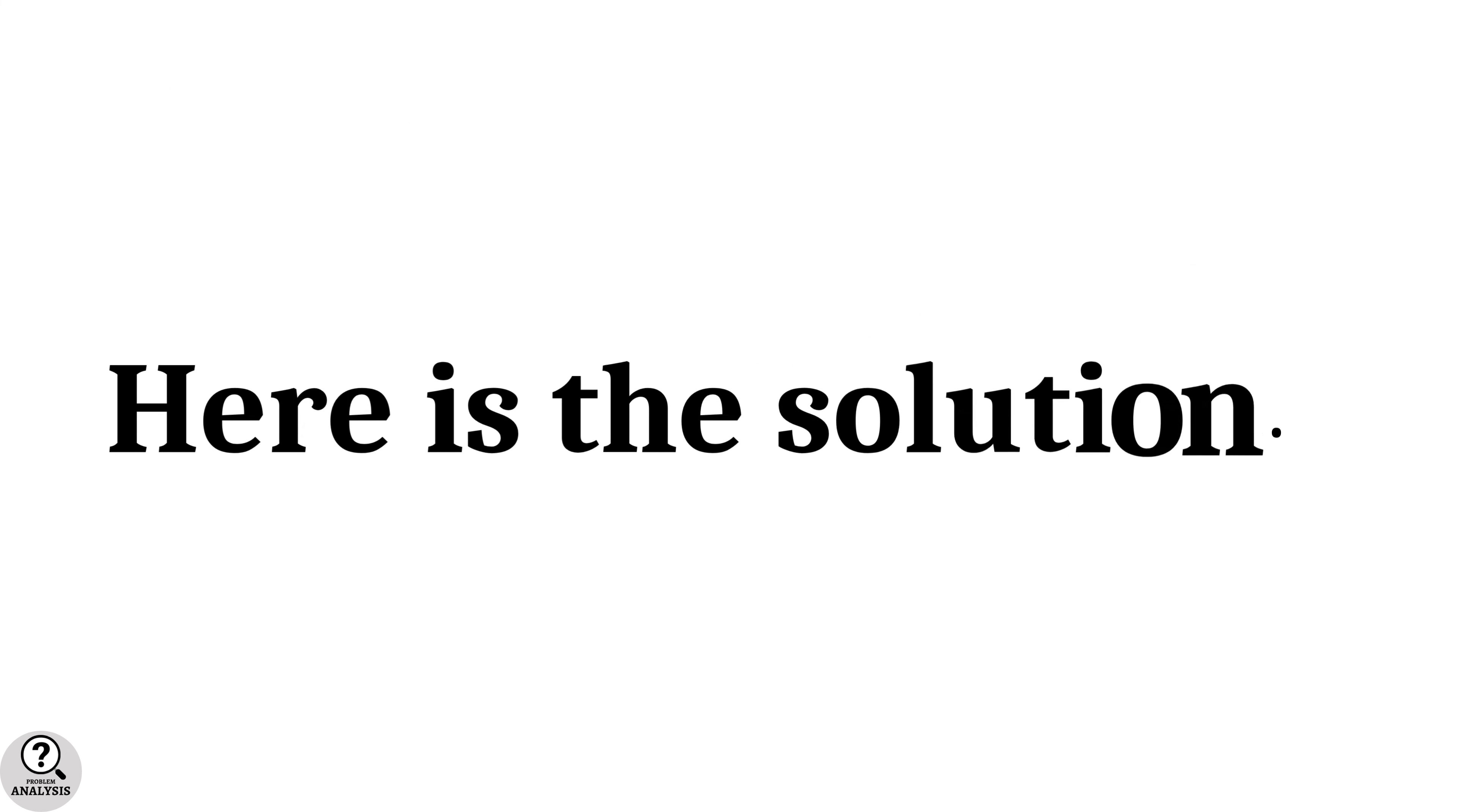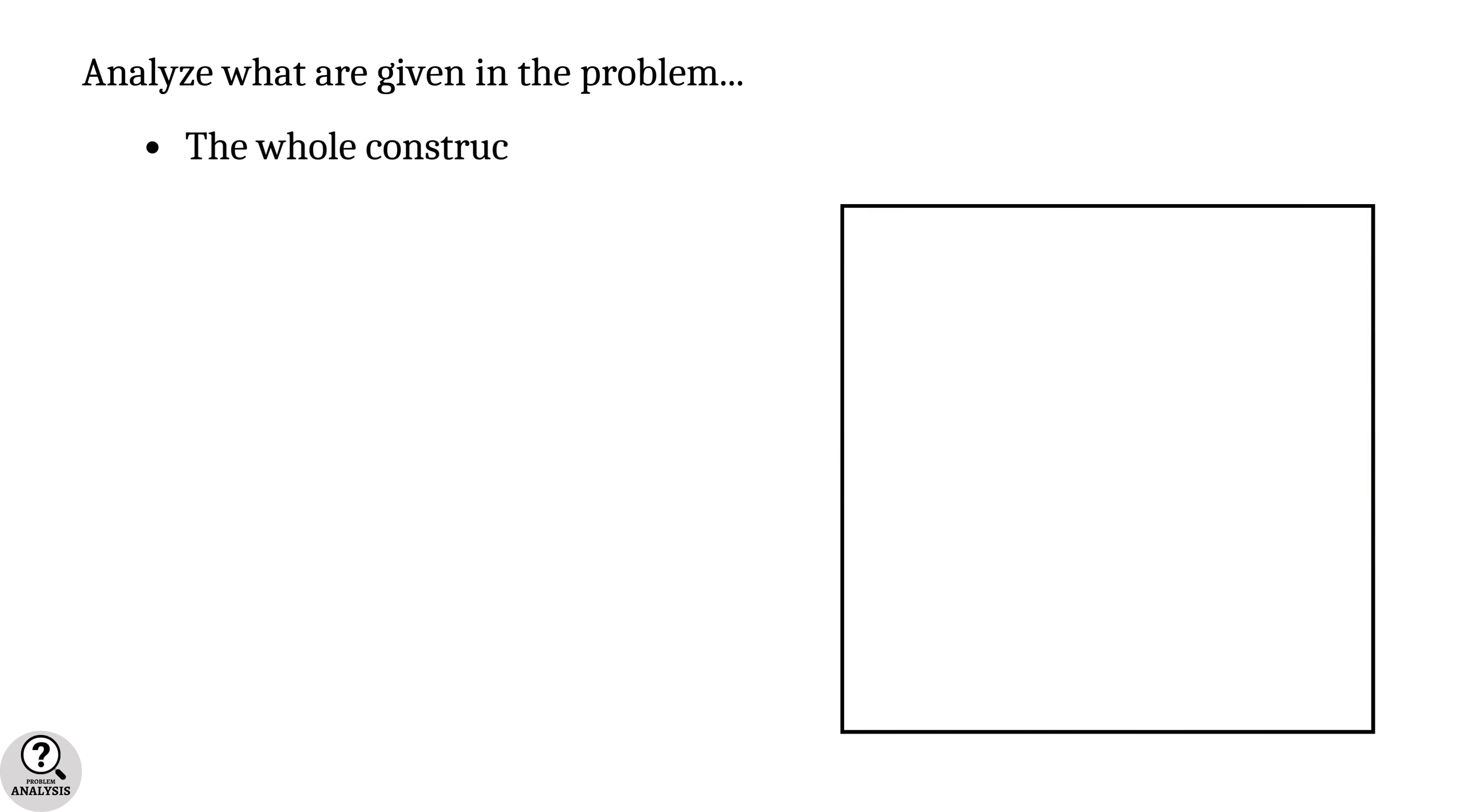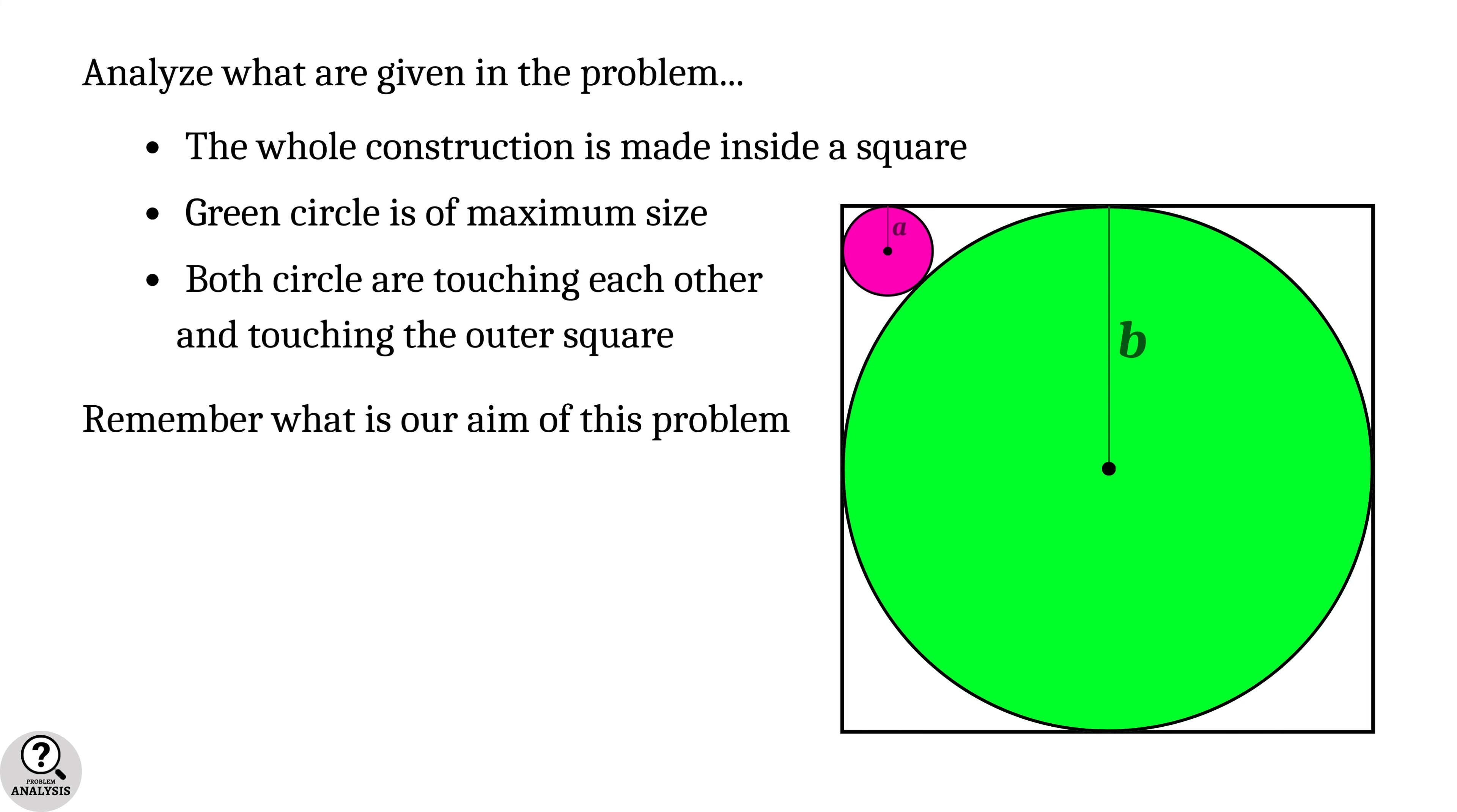And the solution is right here. First, let's analyze what are given in the problem. The whole construction is made inside a square. The green circle drawn inside the square is of maximum size. And finally, both circles are touching each other and touching the outer square. Now remember what is our aim of this problem: it is to find the ratio of radii b/a.